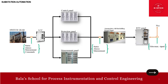Control means switchgear manages the flow of electrical power by switching circuits on and off. Protection means it protects the electrical system from faults by interrupting the flow of electricity during abnormal conditions such as short circuits or overloads. Isolation means it isolates a section of the electrical network for maintenance or in case of fault, ensuring safety for personnel and equipment. The components include circuit breakers, disconnect switches, fuses, and protective relays.